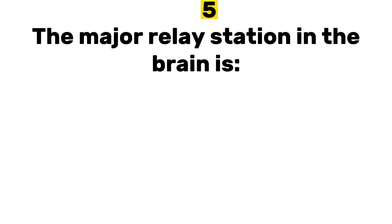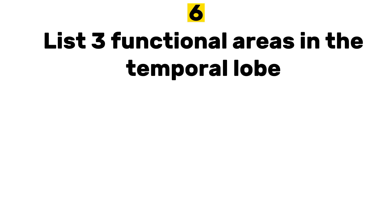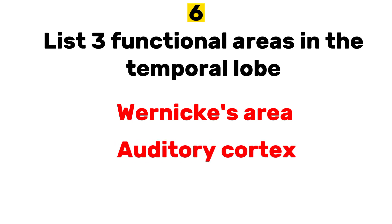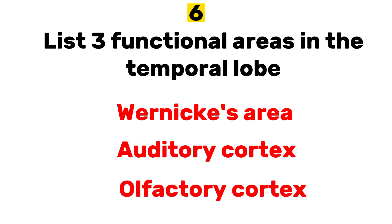Number five: the major relay station in the brain is dash. Answer: thalamus. Number six: list three functional areas in the temporal lobe. Answer: Wernicke's area, auditory cortex, and olfactory cortex.